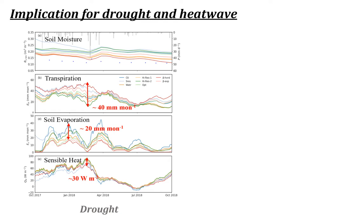We also examined the implications for drought and heatwaves. During drought, different parameterizations simulate distinctly different soil moisture conditions, causing up to 40 mm per month difference in transpiration and 20 mm per month difference in soil evaporation. This difference in water flux exchange also changes energy partitioning.